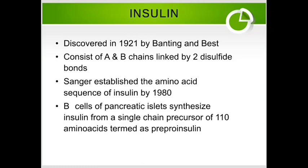Insulin consists of an A chain and a B chain linked by two disulfide bonds. Sanger established the amino acid sequence of insulin by 1980. Beta cells of pancreatic islets synthesize insulin from a single-chain precursor of 110 amino acids, termed pre-pro-insulin.